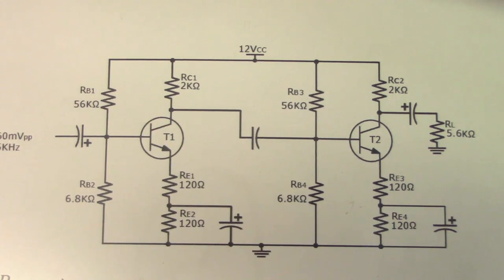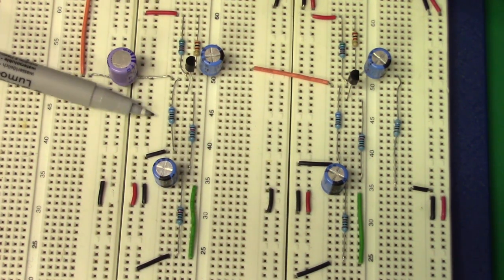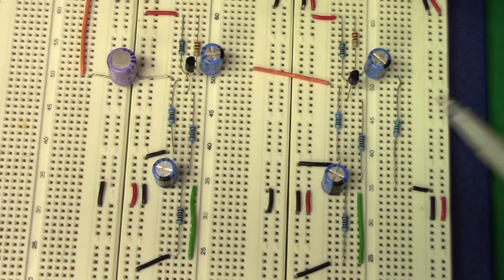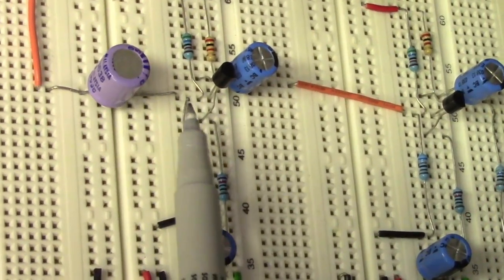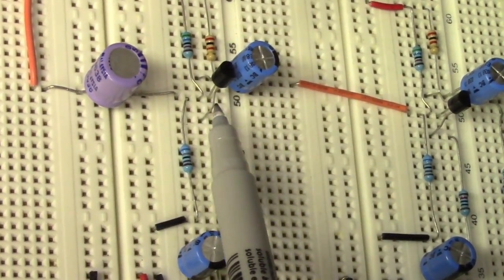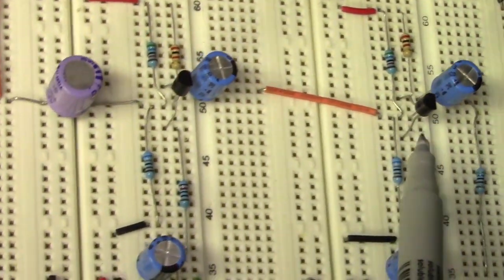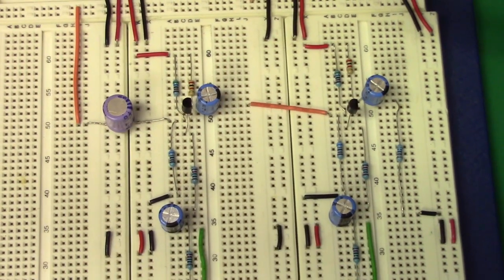We use the split emitter resistor to improve fidelity, so that R'e or REj doesn't vary a lot and cause a distorted output. Here's the actual circuit with RB1 through RB4, RC1, RC2, the load resistor, and the 120 ohm bypass resistors on both stages. You can see the input coming into the base of the first transistor, the emitter, the collector, output taken off the collector, capacitively coupled into the next stage base, and then taken off the collector of the final stage. Let's apply DC power.